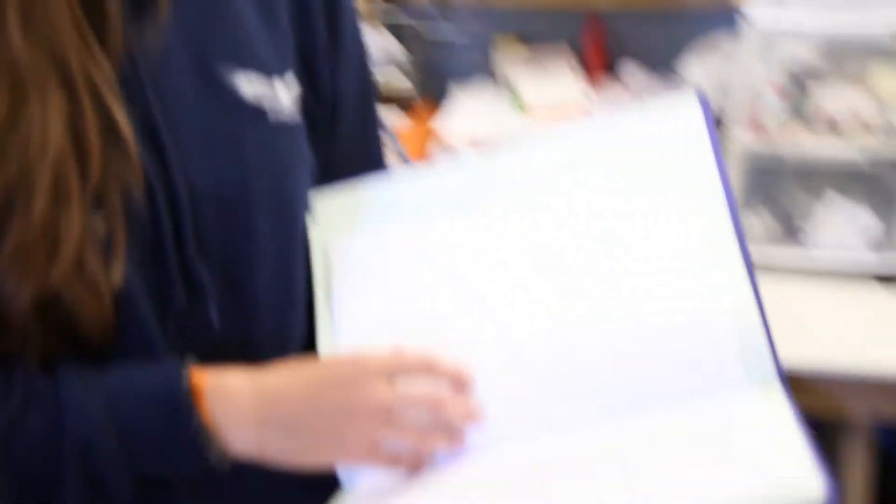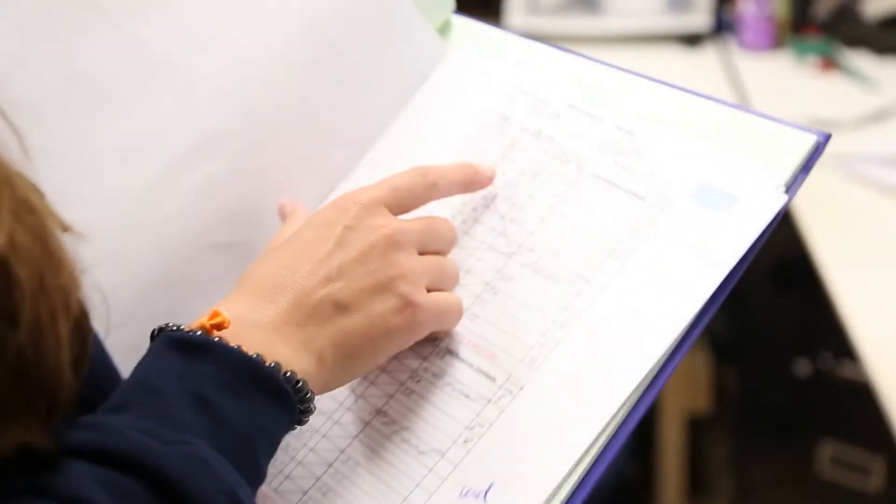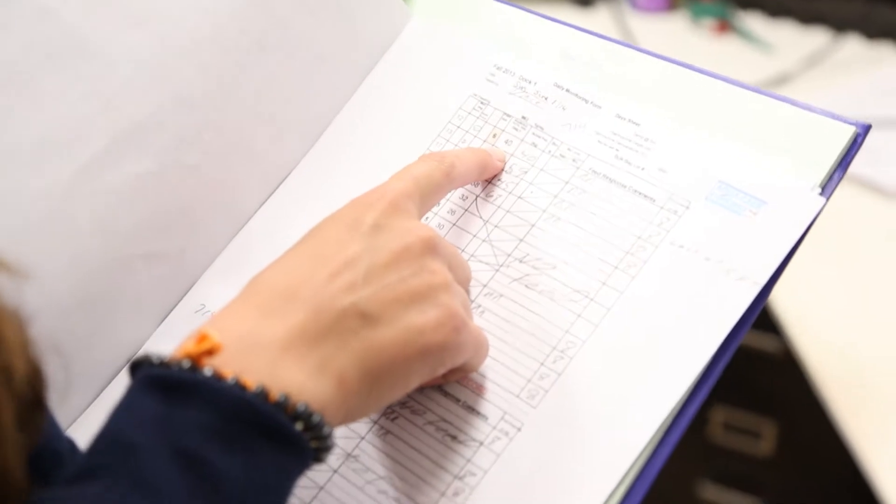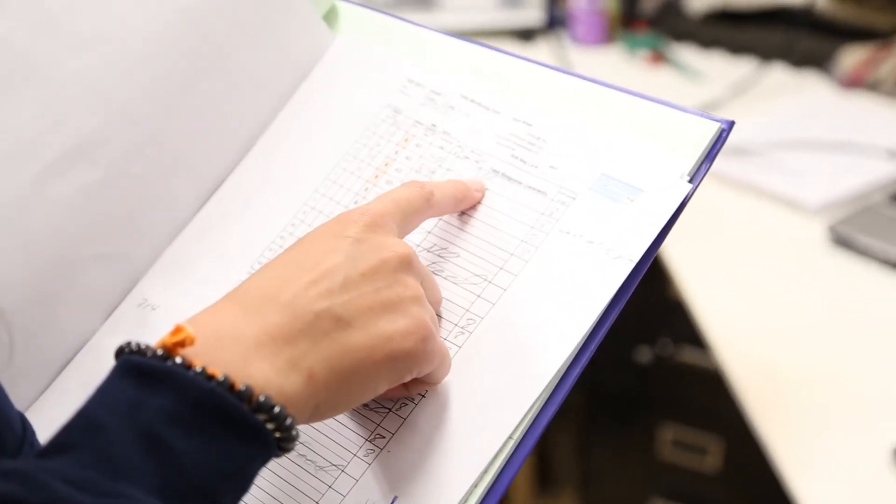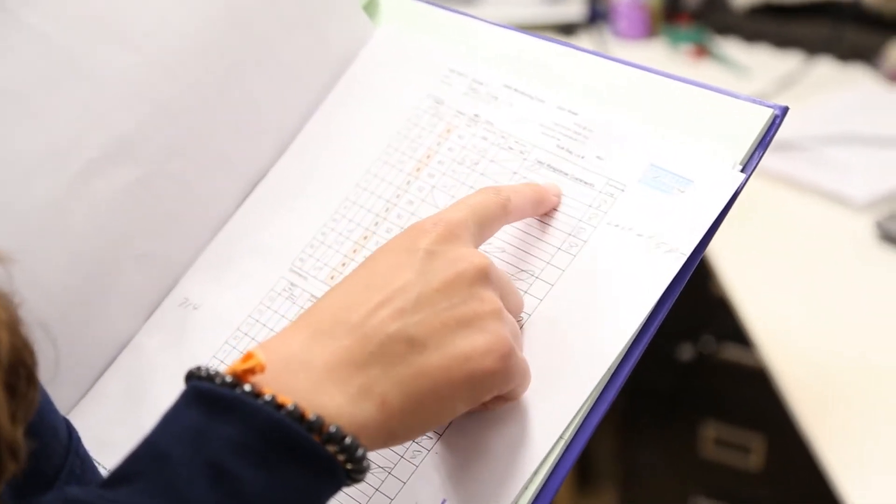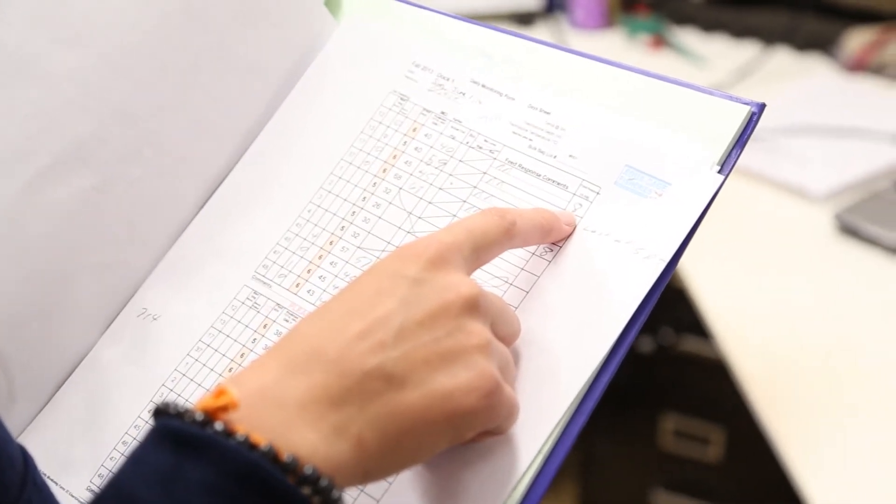And in here you can see feed sheets. So on any given day we'll have feed sheets with the amount of feed going into each cage, what actually gets fed. This is an RR meaning rapid response, so they ate very well. And on a scale of 1 to 10 they ate and ate.